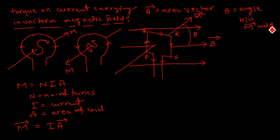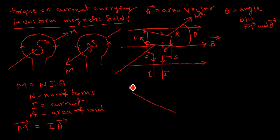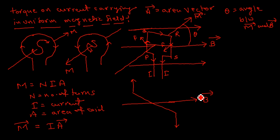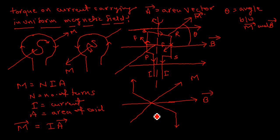Now, considering the current I flowing through the sides and the forces acting on the coil — the direction of force on one side is shown here. Joining these, the net force configuration is like this. The direction of the magnetic field is shown, this is F. You can see this is the midpoint, and this is the direction of the magnetic moment M.